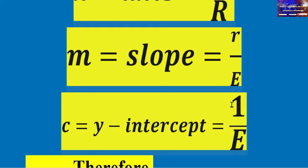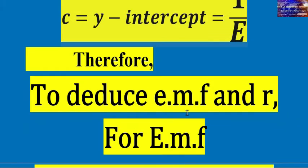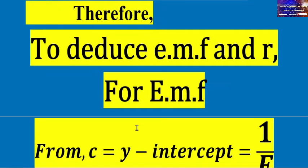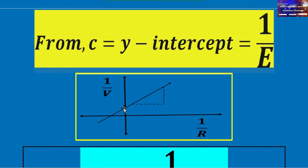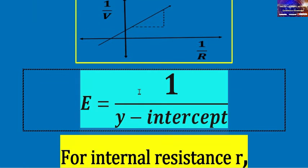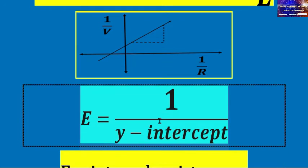How to solve for EMF and internal resistance: for EMF, it is obtained from the y-intercept. The y-intercept equals 1 over EMF, so EMF equals 1 over the y-intercept. That is how you calculate the EMF of the cell.